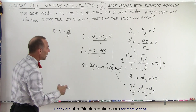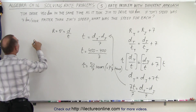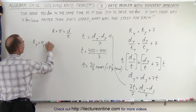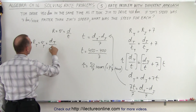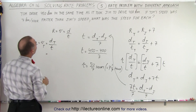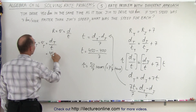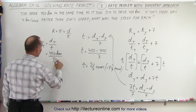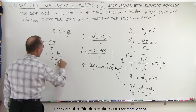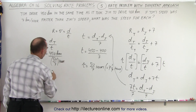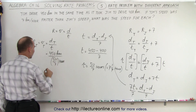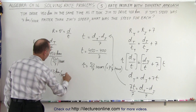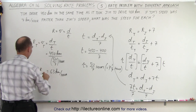Now let's find the rates of each of them. The rate of Tom, which is equal to the velocity of Tom, is equal to the distance of Tom divided by the time. The distance is 450 kilometers, and we divide it by the time, which is 50 divided by 7 hours. So 450 divided by 50/7 is 9 times 7, which is equal to 63 kilometers per hour. That would be the rate for Tom.